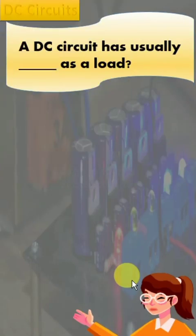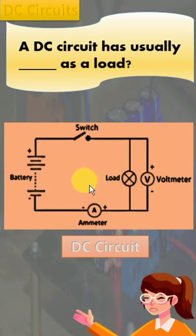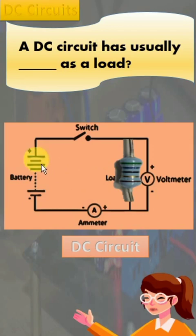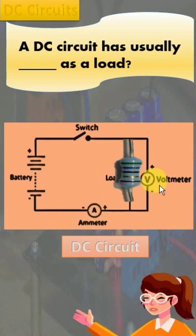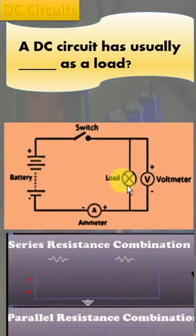Direct current circulates through a closed channel called a DC circuit. Current that only flows in one direction is used in the majority of low voltage applications. The resistor is the main component in a DC circuit. A basic DC circuit consists of a battery or DC power supply, a load resistor, a switch, connecting leads, and measuring instruments like an ammeter and voltmeter. The load resistor may be linked in series, parallel, or series-parallel configuration.